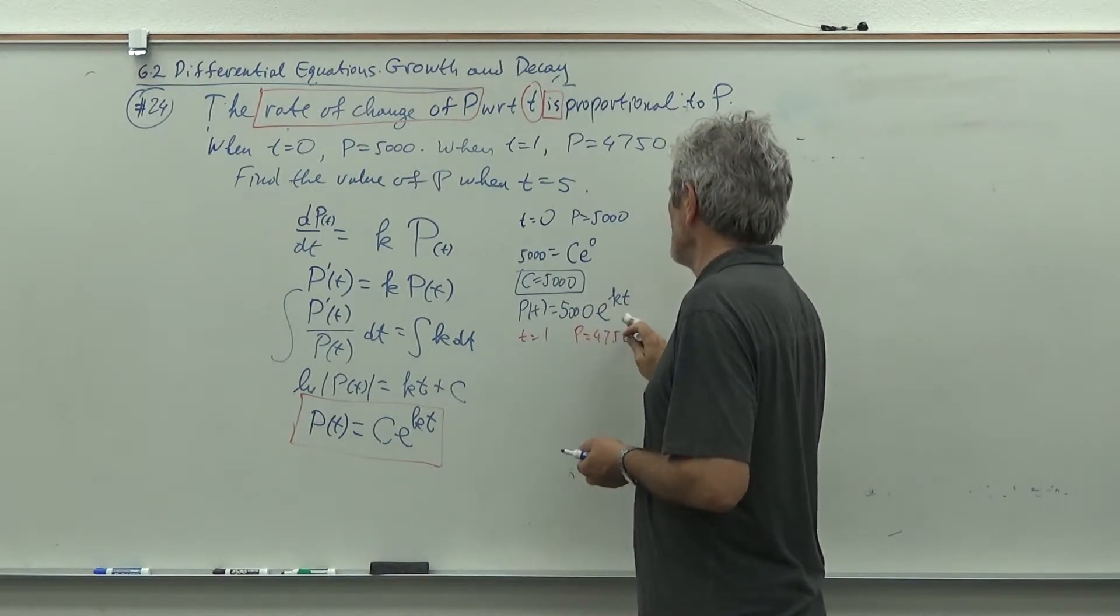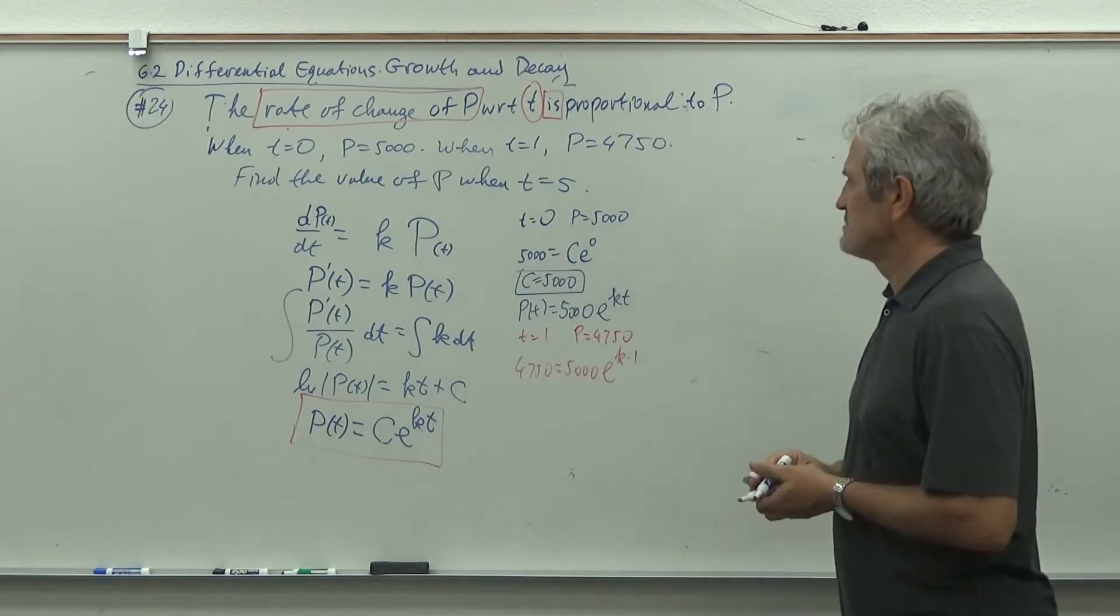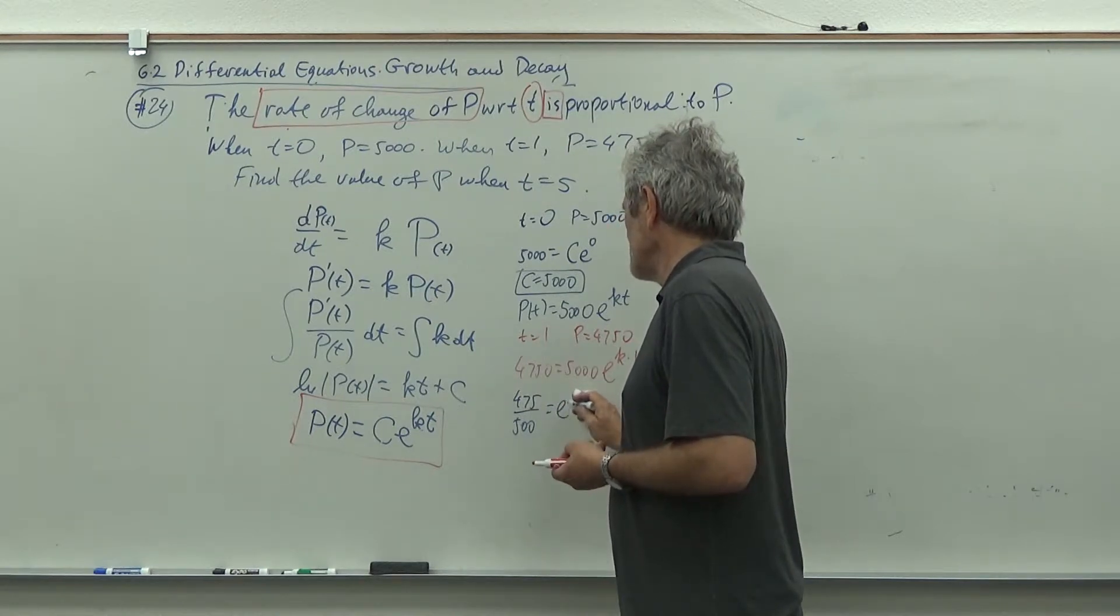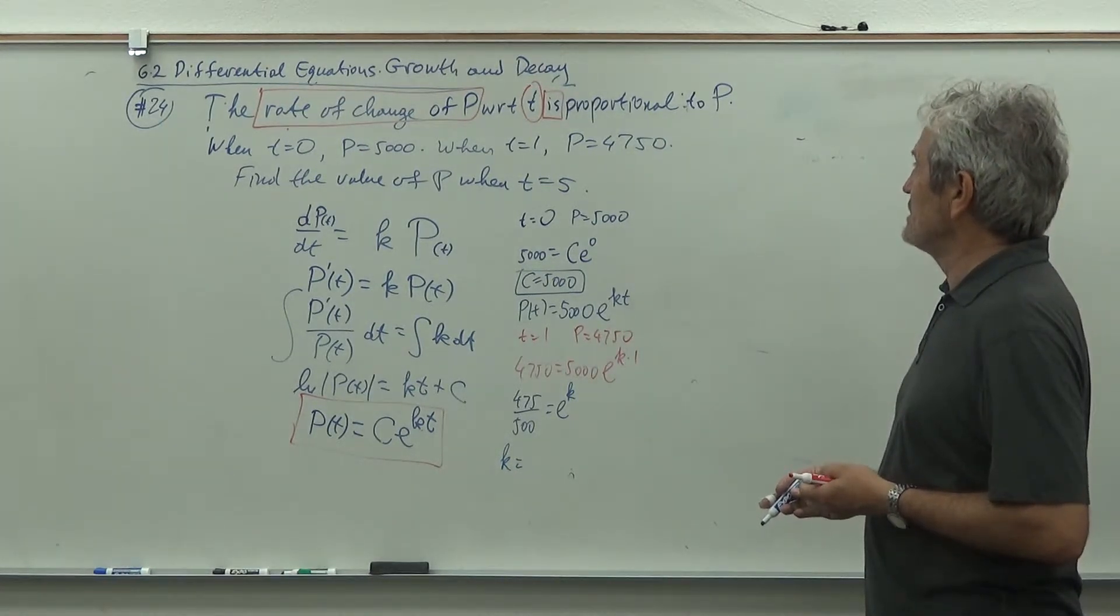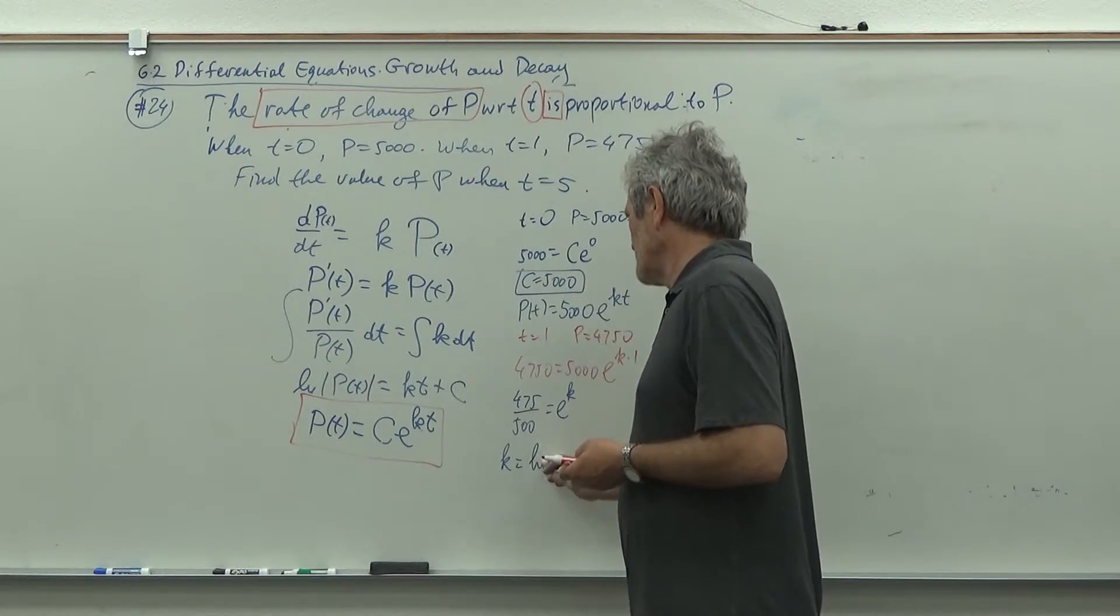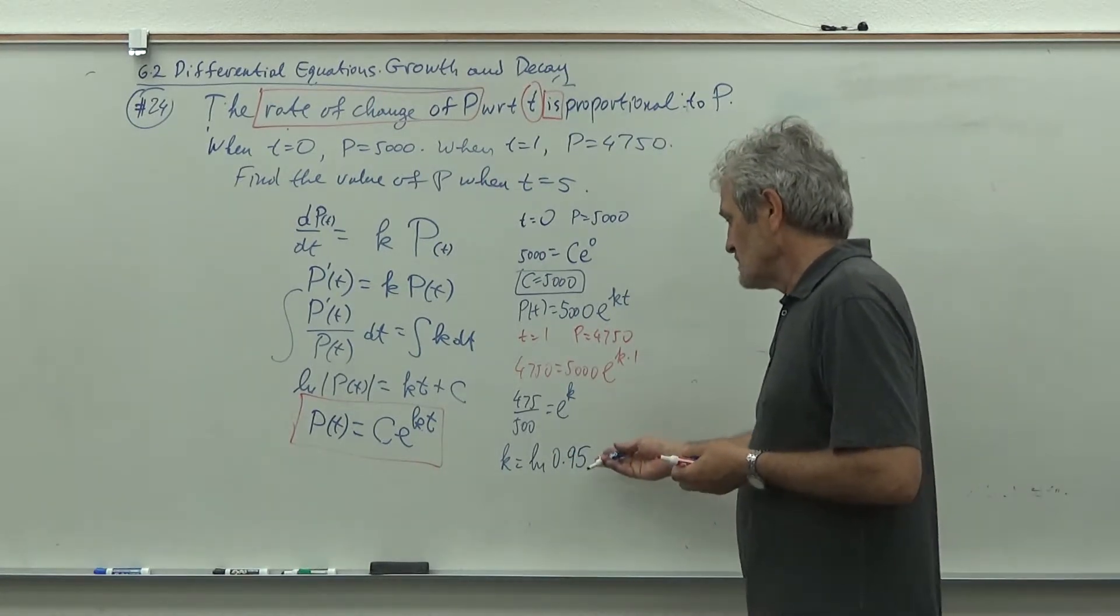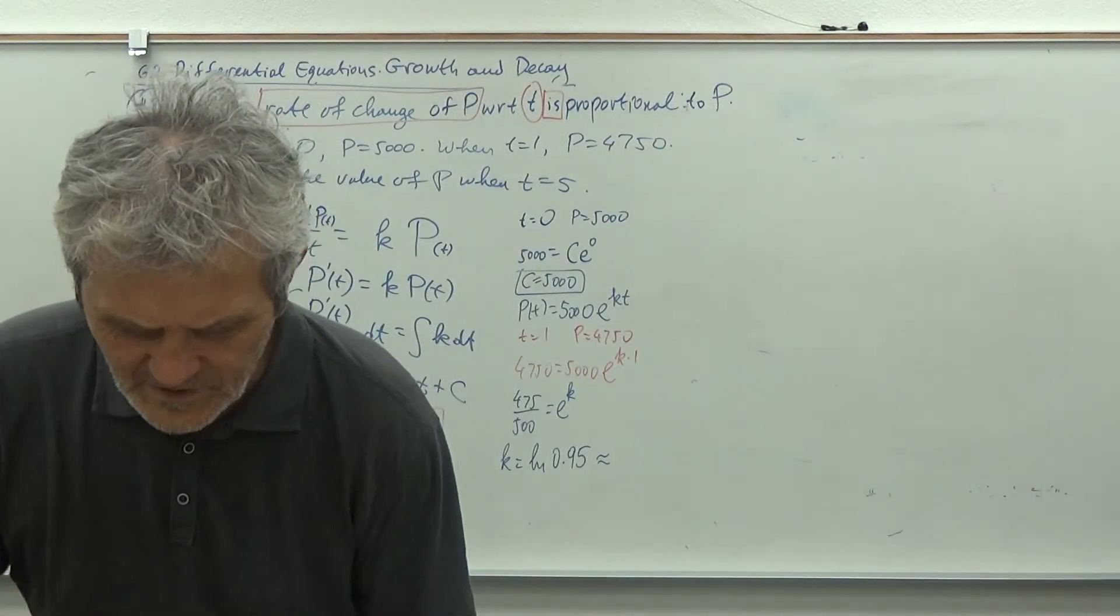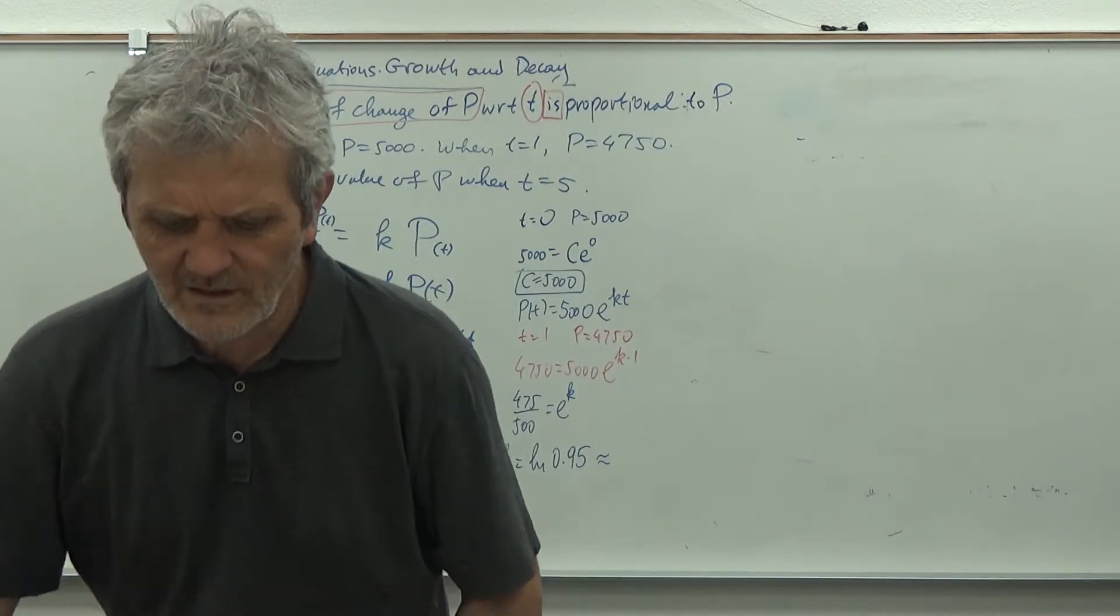So now we are better: P of T starts with 5000 and then increases. That's what it says: starts with 5000, increases. At which rate? We don't know yet. But this information will help us. Now plug in T equals one. P is 4750. So we get 4750 equals 5000 e to the k times one. Then we divide by 5000, so we get 475 over 500, which is 0.95, equals e to the k. So k is ln of 0.95.